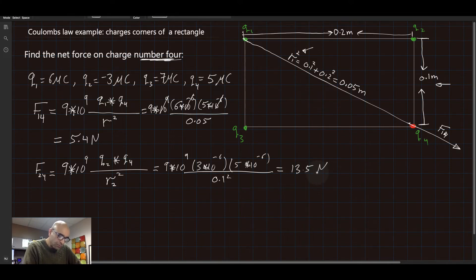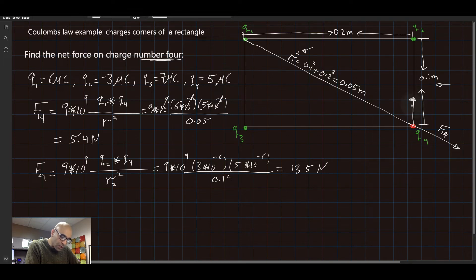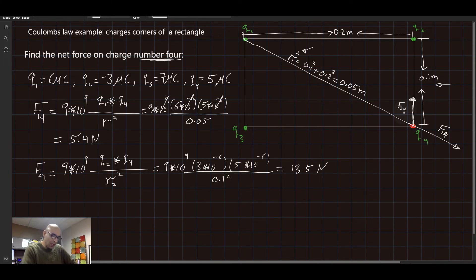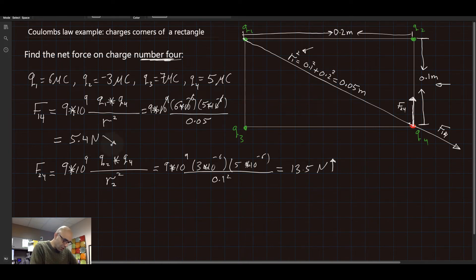For the direction of F2 on 4: Q2 is negative and Q4 is positive, so they attract each other. Therefore the force on Q4 is directed upward, toward Q2. Now let's find the final force, F3 on 4.